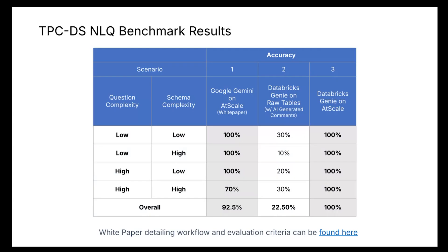Hi everyone, my name is Dave Mariani. I'm the CTO and co-founder of AtScale. Today we're going to see how a semantic layer can improve the accuracy of natural language queries using Databricks Genie and Unity Catalog. First, a little bit about accuracy — you can go to our website and see our white paper about how a semantic layer can improve the accuracy of natural language queries.